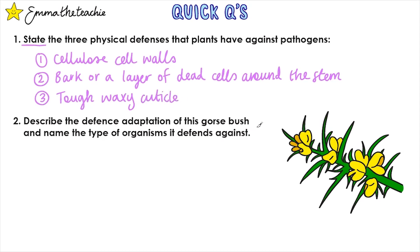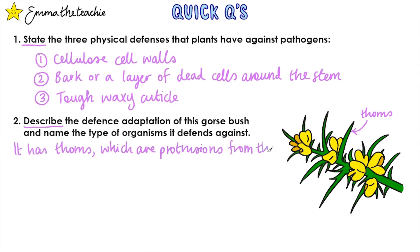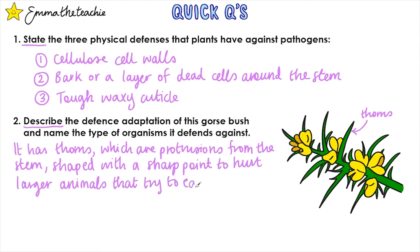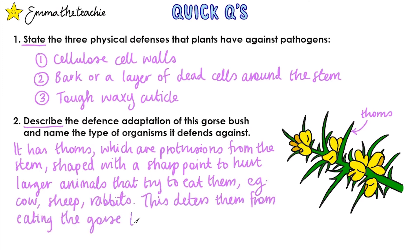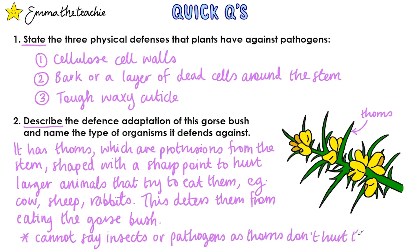Describe the defense adaptations of this gorse bush and name the type of organisms it defends against. It has thorns, which are protrusions from the stem — meaning they stick out — shaped with a sharp point to hurt larger animals that try to eat them, for example cows, sheep and rabbits. This deters the animals from eating the gorse bush. Note that you cannot say it deters insects or pathogens, as thorns don't hurt them — they only deter large herbivores.